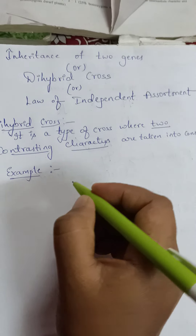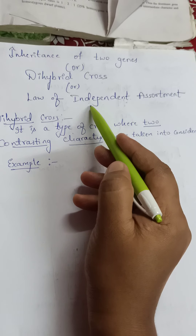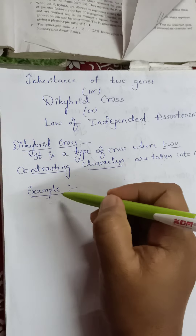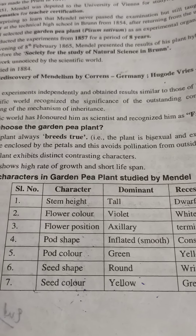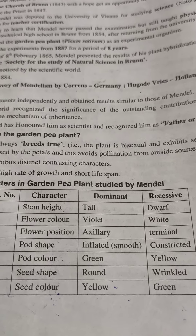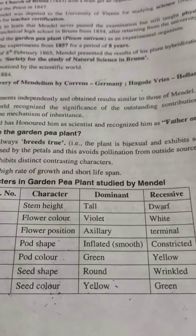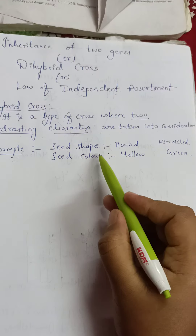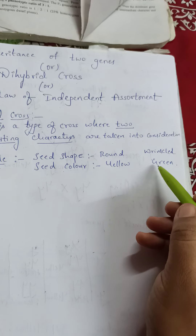Now we will do an example for dihybrid cross — the same thing applies for inheritance of two genes and for the law of independent assortment. Out of the seven contrasting characters, let's take seed shape and seed color as an example. In seed shape we have round and wrinkled, where round is dominant and wrinkled is recessive. In seed color we have yellow and green, where yellow is dominant and green is recessive.